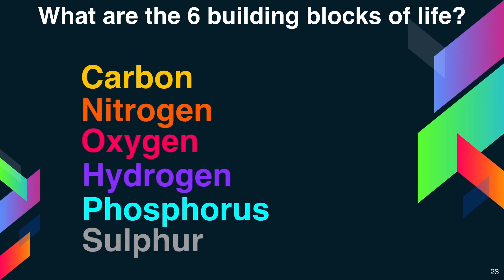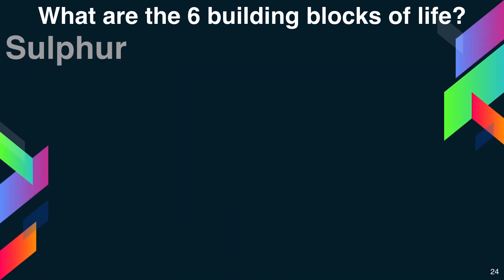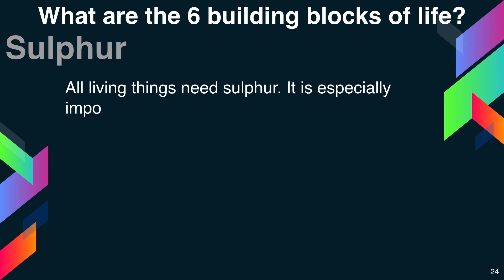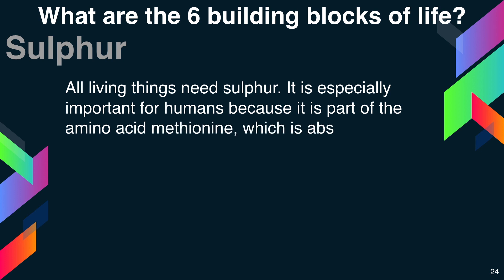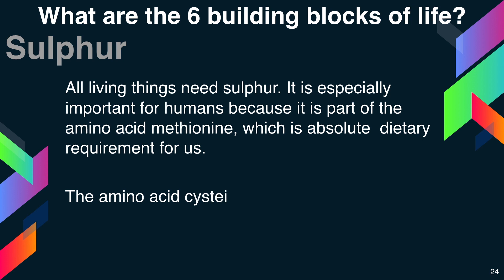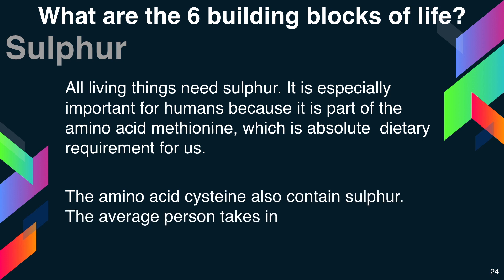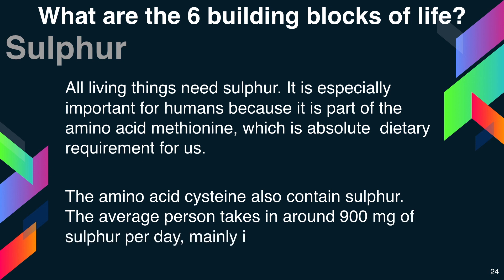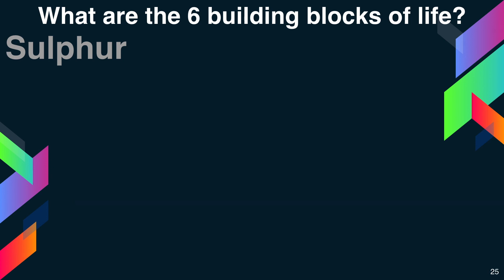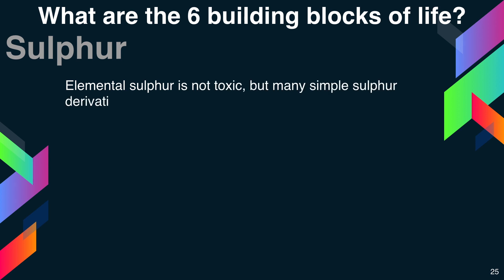Coming to the next element: sulfur. All living beings need sulfur. It is especially important for humans because it is part of the amino acid methionine, which is an absolute dietary requirement for us. The amino acid cysteine also contains sulfur. The average person takes in around 900 mg of sulfur per day, mainly in the form of protein.